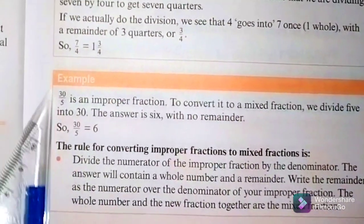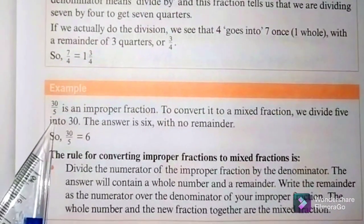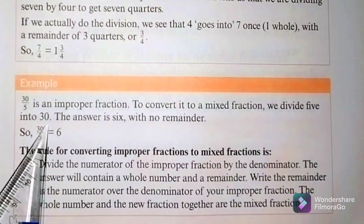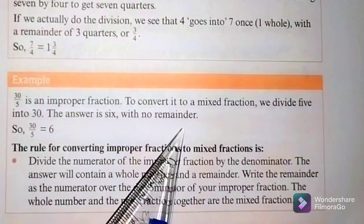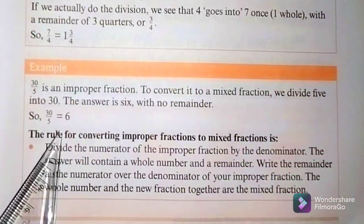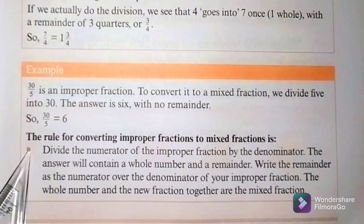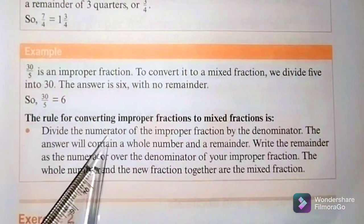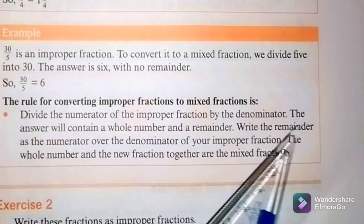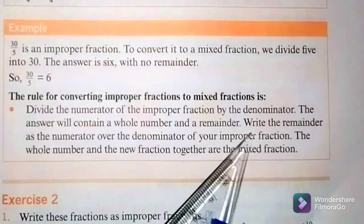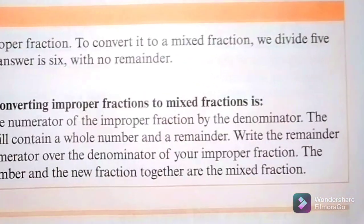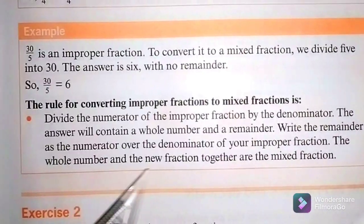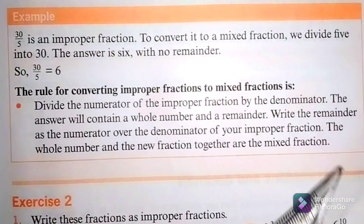Another example: 30 over 5 is an improper fraction. To convert it to a mixed fraction we divide 5 into 30. The answer is 6 with no remainder, so 30 over 5 is the whole number 6. The rule for converting improper fractions to mixed fractions is: divide the numerator by the denominator; write the remainder as the new numerator over the original denominator; the whole number and the new fraction together form the mixed fraction.